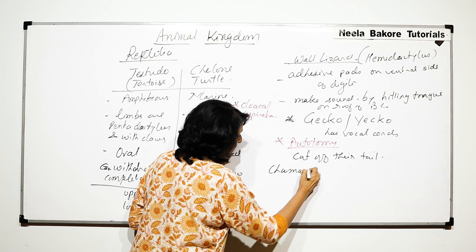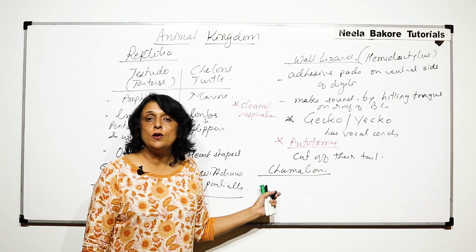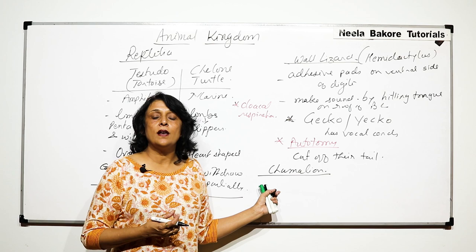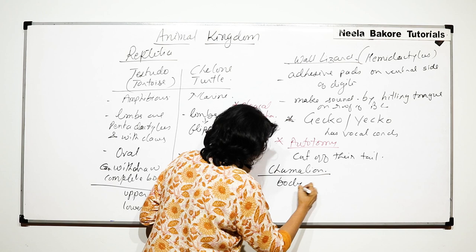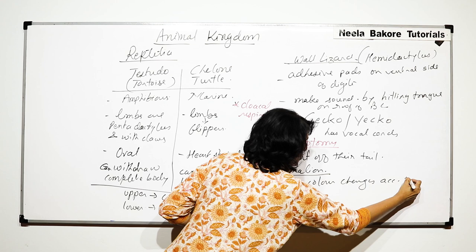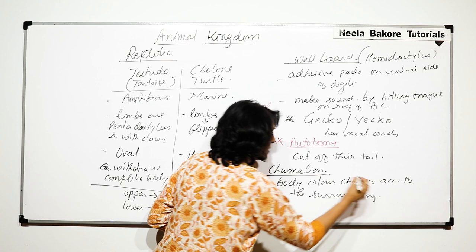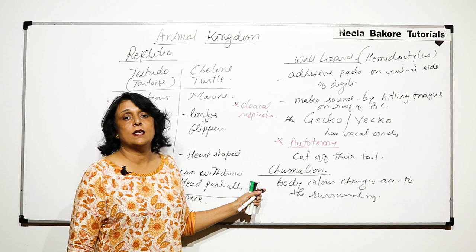One more example is the chameleon. Chameleons are known for the coloration of their body — they are able to change body color according to their surrounding. This is the unique feature seen in the chameleon.